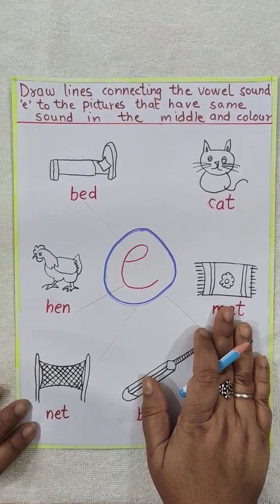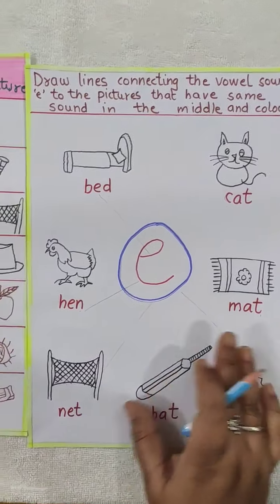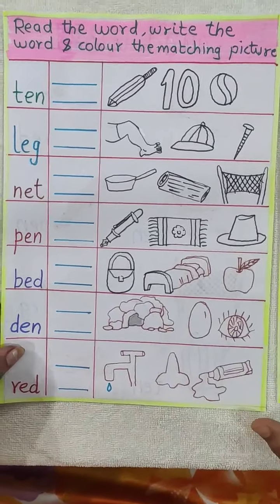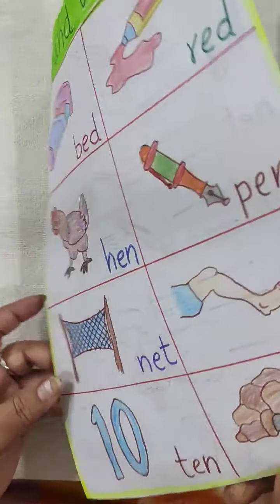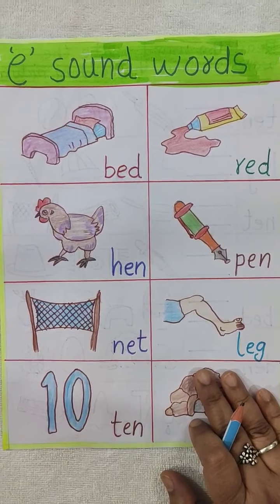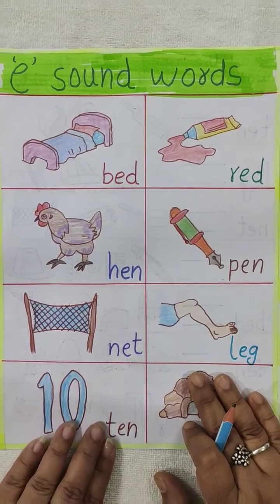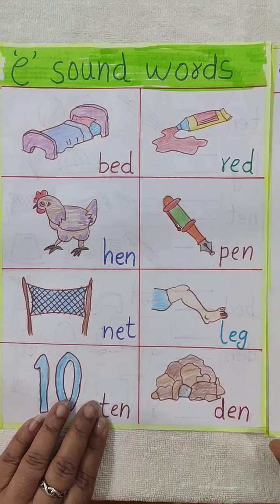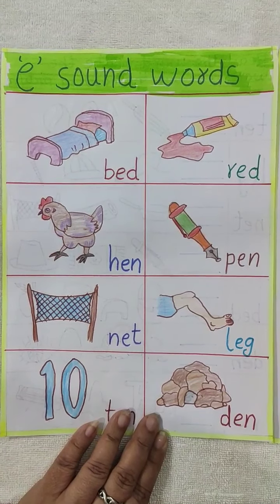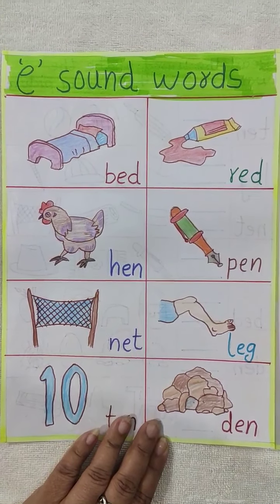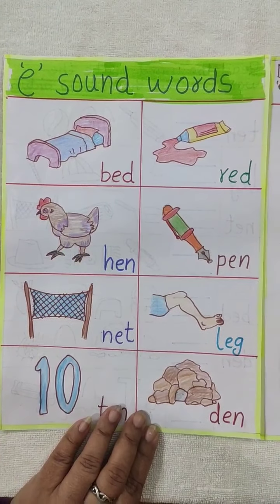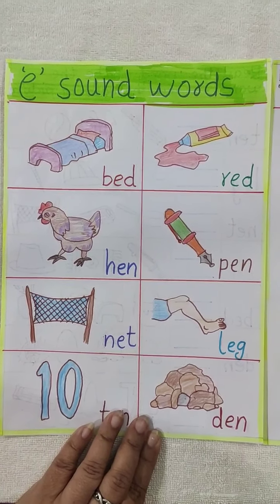Like this, you have to do the worksheet. Okay children, learn the E sound words again and again and practice them. If you practice, you will learn them. Take care of yourself. Be safe. Stay at home. Wash your hands regularly. Okay children. Bye bye.